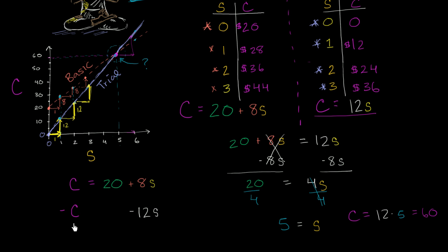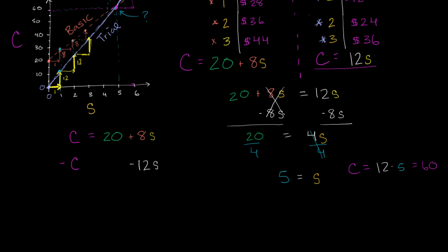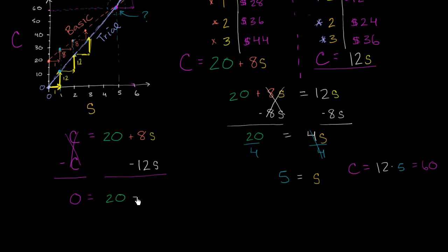So if we subtract c from one side and 12s from the other, what do we actually get? On the left hand side, if I have c minus c, I just end up with 0 — they completely negate each other, and there's nothing left on the left hand side. So I just have 0 on the left hand side. On the right hand side, I have the 20 still, and then I have 8 of something, and then I'm subtracting 12 of something. So 8s minus 12s is going to give me negative 4s. This is interesting now — I now have one equation and one unknown. That one unknown is s, and so I should be able to solve for it.